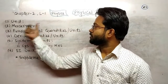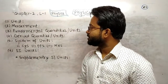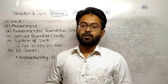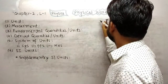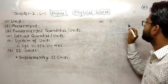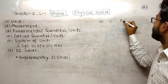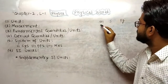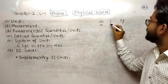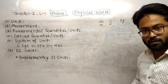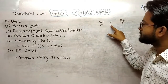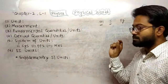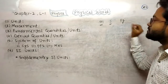First point is unit. What is unit? Unit is a fixed amount of any quantity, like meter, second, kilogram. Length is a quantity and unit of length is meter. Time is a quantity and unit of time is second. Mass is a quantity and unit of mass is kilogram.